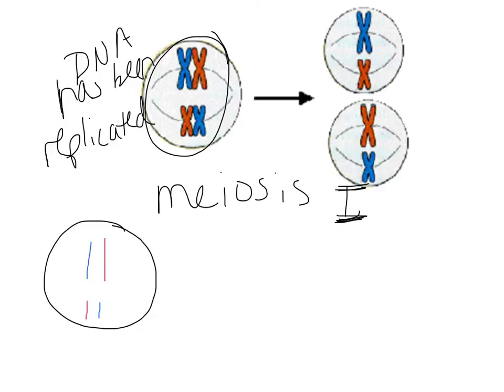In meiosis I, we take these replicated chromosomes and separate the homologous pairs. Each part of meiosis — meiosis I and meiosis II — goes through PMAT, just like mitosis. You don't need to memorize every single detail; we're just going to hit the high points of what's happening during each phase. The biggest one is going to be prophase I, because this is where you're going to get a lot of that genetic variation.